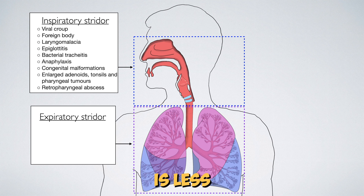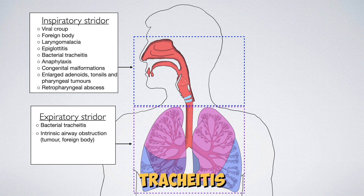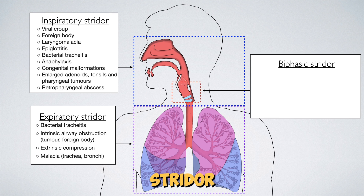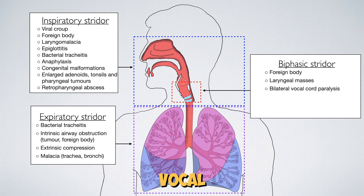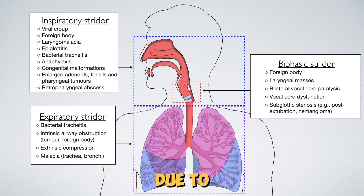Expiratory stridor is less common and can be easily mistaken for wheeze, so consider stridor in a patient with wheeze-like symptoms not responding to treatment. Causes of expiratory stridor include bacterial tracheitis, intrinsic and extrinsic airway obstruction, and malacia of the trachea or bronchi. Biphasic stridor occurs due to foreign body, masses within the larynx, vocal cord paralysis or dysfunction, or subglottic stenosis due to post-extubation or tumours.